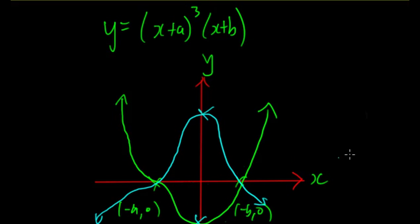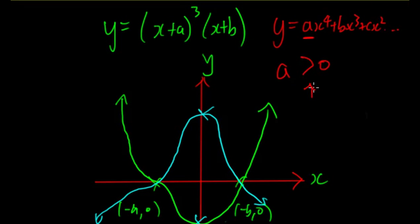However, if you are looking at the general equation y = ax^4 + bx^3 + cx^2, then you can look at a. If a is greater than zero, it will look like this. And if a is less than zero, it will look more like that.